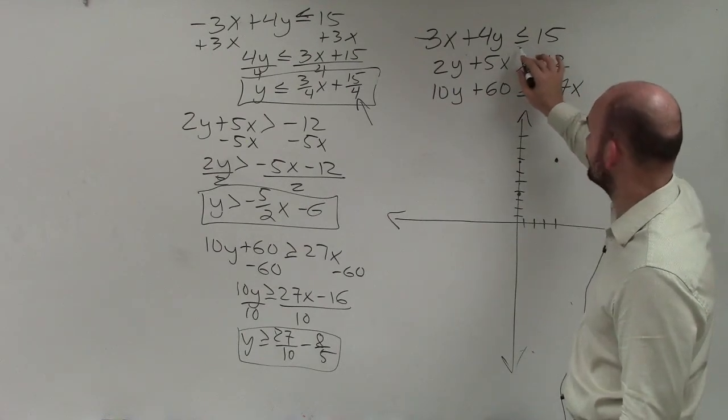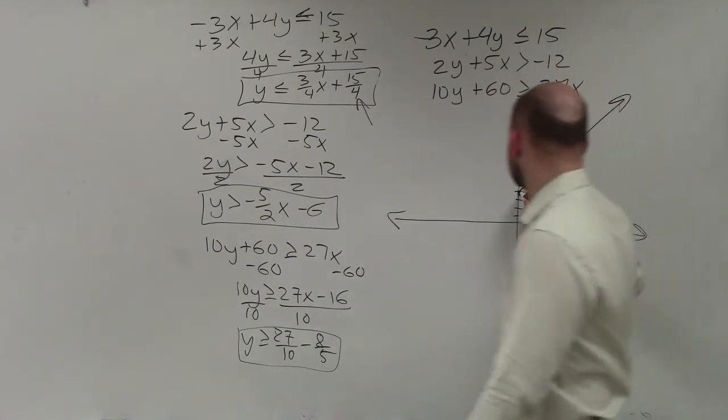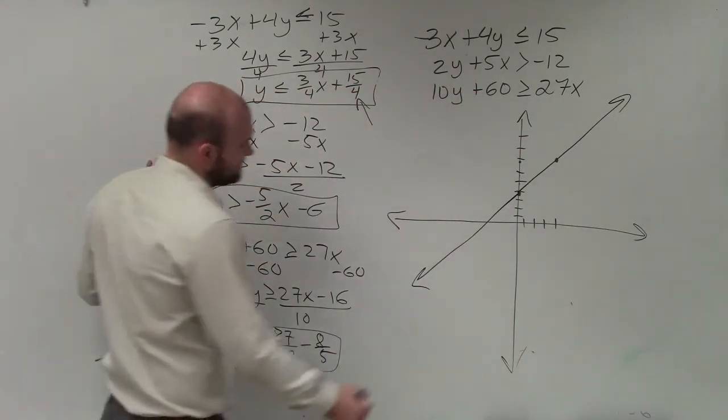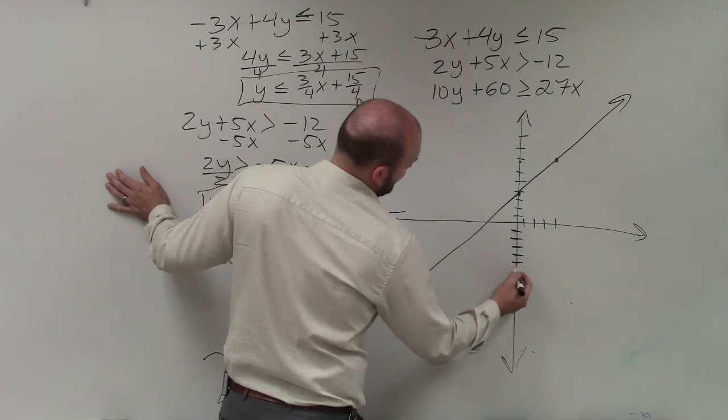And remember, this is less than or equal to. So therefore, that's going to be a solid line. For the next point, my y-intercept is negative 6. So I'll go down 6. 1, 2, 3, 4, 5, 6.